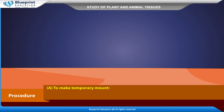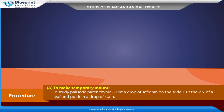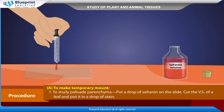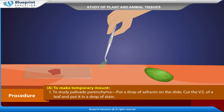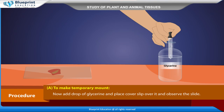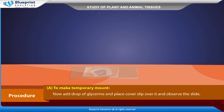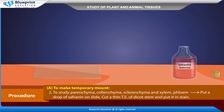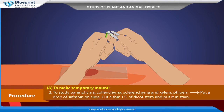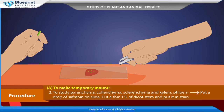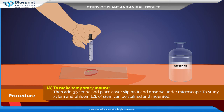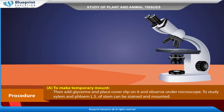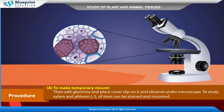Procedure — To make a temporary mount to study palisade parenchyma: put a drop of saffranin on the slide, cut the VS of a leaf and put it in a drop of stain. Add a drop of glycerine and place a cover slip over it and observe the slide. To study parenchyma, colenchyma, sclerenchyma, and xylem-phloem: put a drop of saffranin on the slide, cut a thin TS of dicot stem and put it in stain, then add glycerine and place cover slip and observe under microscope. To study xylem and phloem, an LS of stem can be stained and mounted.